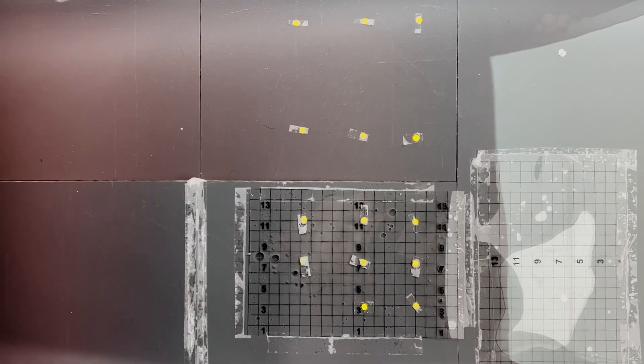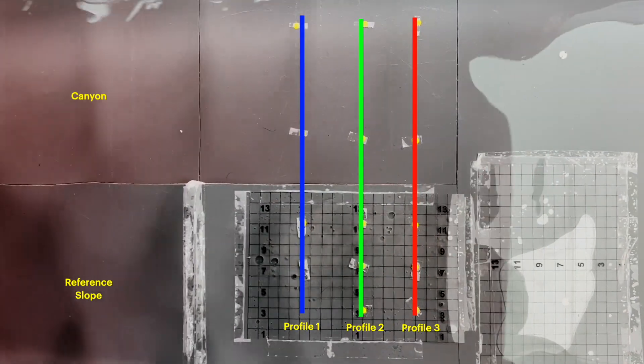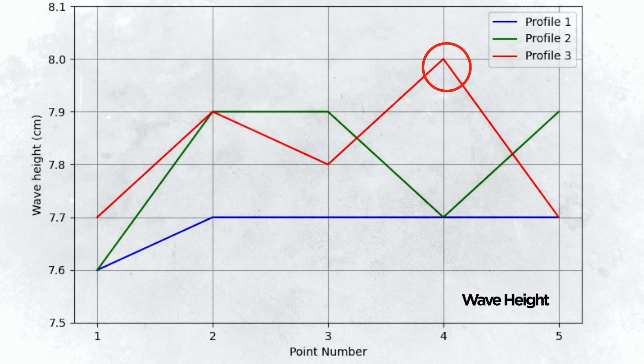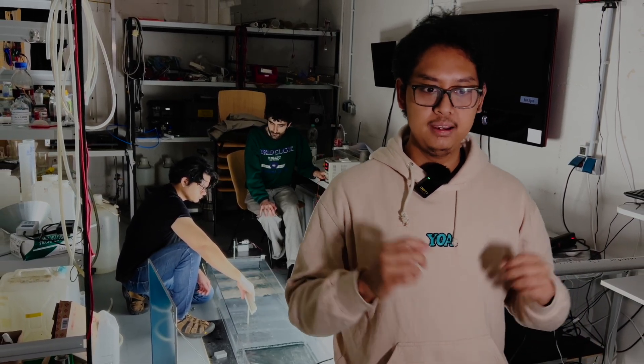We identified three distinct profiles in the topography. To quantify our findings, we conducted point measurements along three separate lines, each containing five different measurement points for wave height. These profiles are situated in an area where we observed wave amplification during our simulation. From the data, we noted that the wave begins to amplify starting from profile 2, and this amplification continues to be noticeable at profile 3. However, within profile 3 we encountered an anomaly at the end of the profile, where a measurement indicates a higher wave height compared to other points — we suspect this is due to a high degree of uncertainty in our measuring tools. Overall, while we are unable to precisely quantify the amplification of wave height in this canyon scenario, our qualitative observation confirms the existence of the phenomenon theorized earlier.